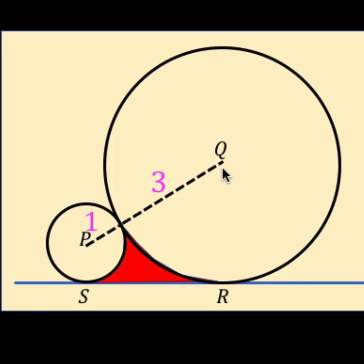First, we can drop a perpendicular from the center of circle Q to the line and let's call this point of intersection as point R. So the angle here is 90 degrees. Let's do the same from point P going to point S, and the angle here is also 90 degrees.